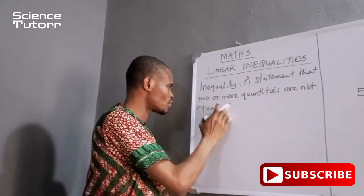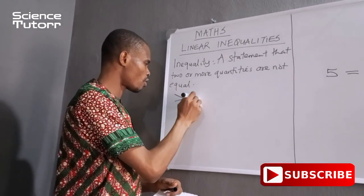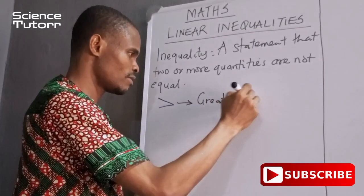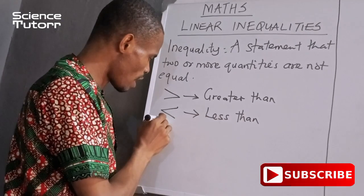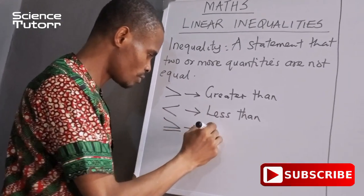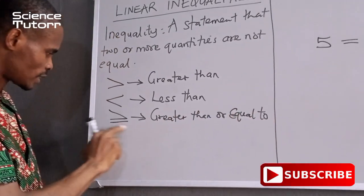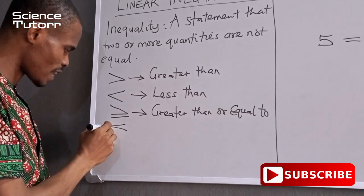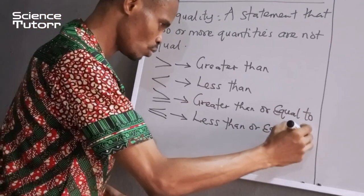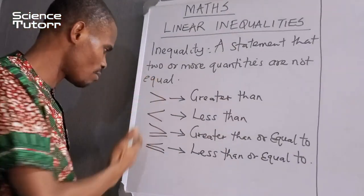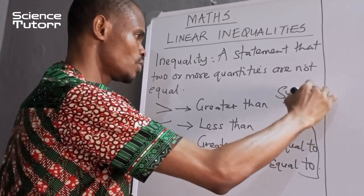We have various signs which we use in inequality. The first one we have is called greater than. We have a second which we call less than. We have a greater than or equal to, and we have a less than or equal to. All of which are known as symbols used in inequality.